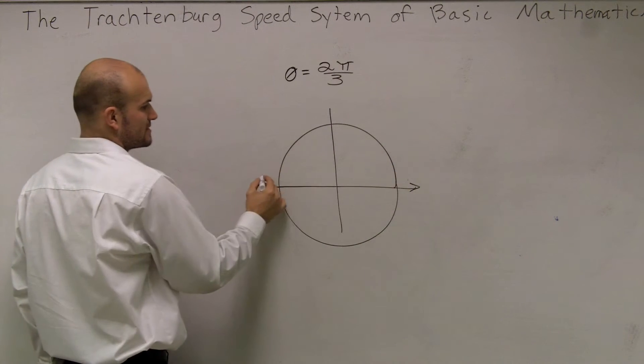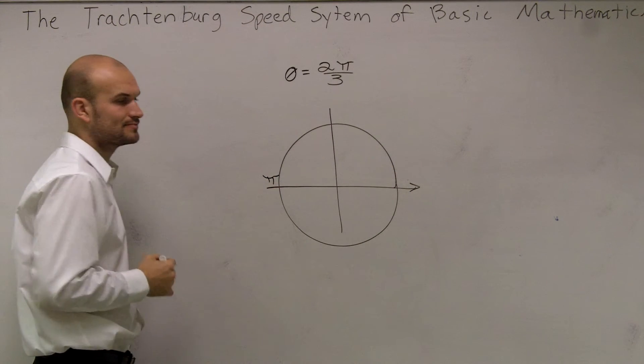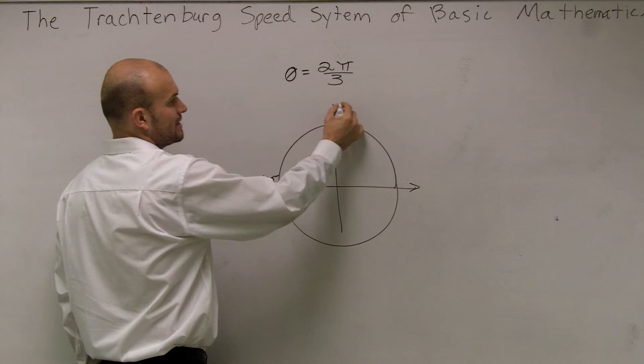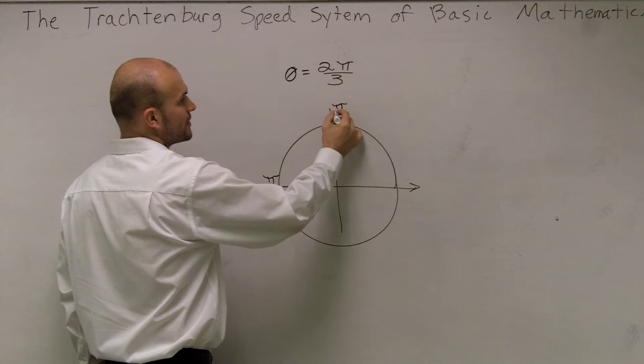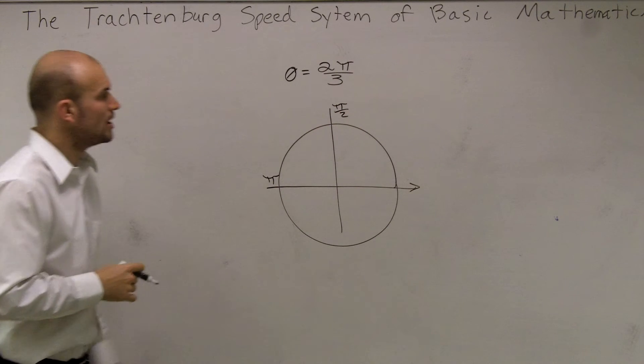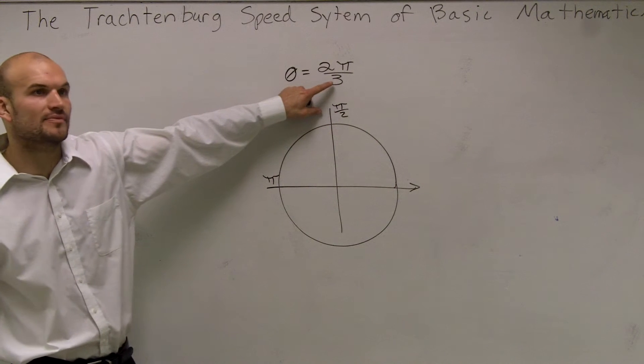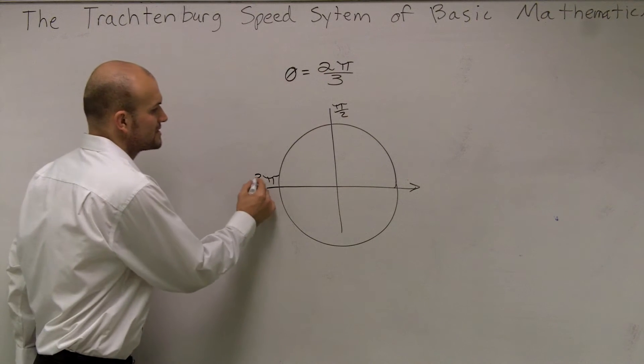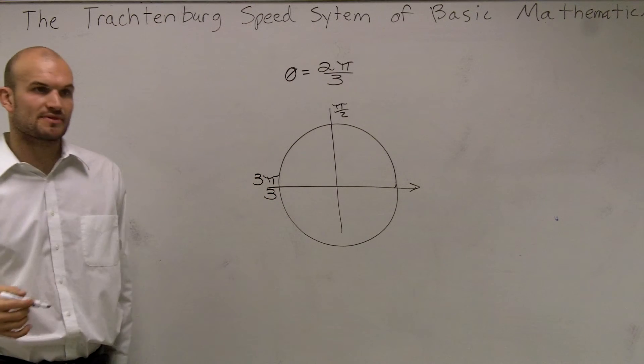If I know this is 0, half here would be π. All the way around is going to be 2π. So half of π would be π over 2, right? Well, they're splitting our π's into 3's. So what I'll do is I'll rewrite my π in terms of thirds.